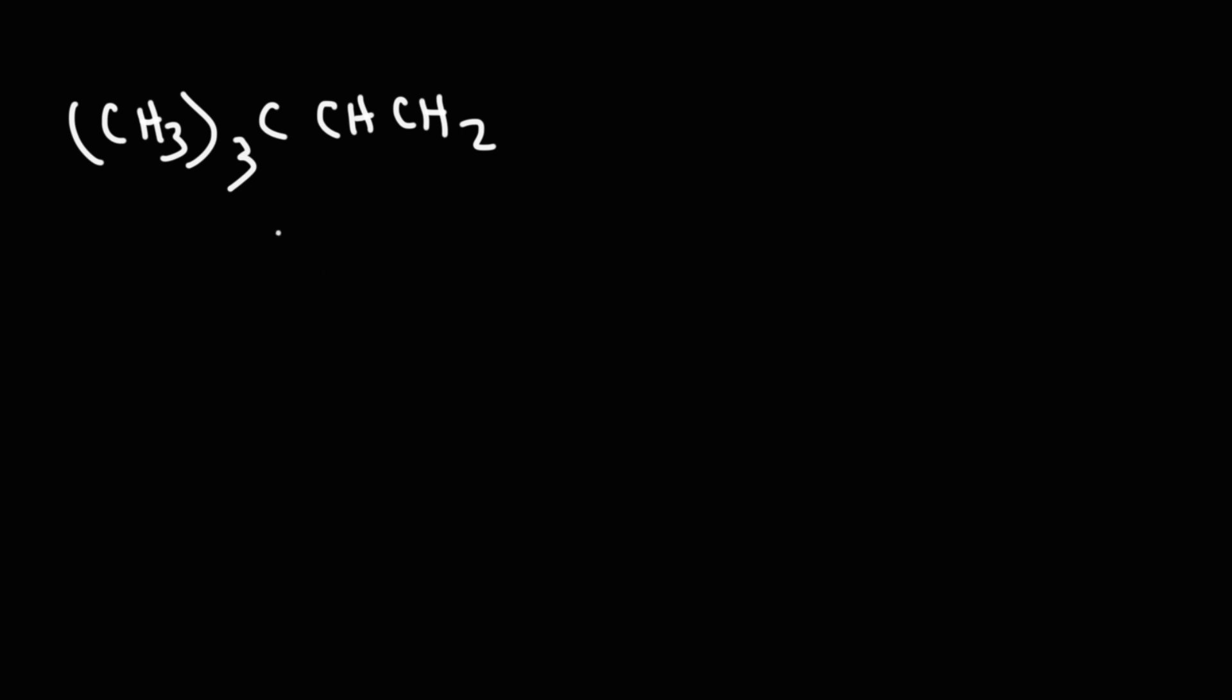So first, I'm going to expand it. Let's start with the carbon atom. So that carbon is attached to three methyl groups. Here's the first one. Here's the second one, and here is the third one. Now, that carbon is attached to a CH and a CH2. So here is the CH carbon, and here is the CH2 carbon.